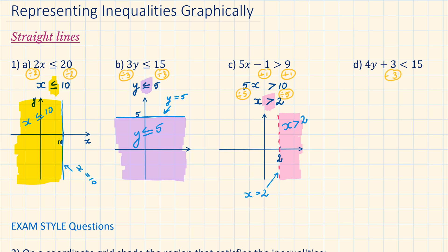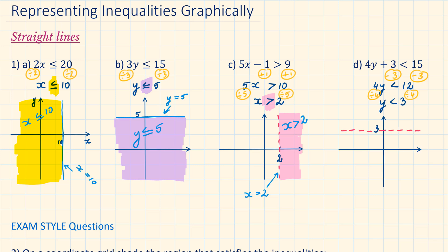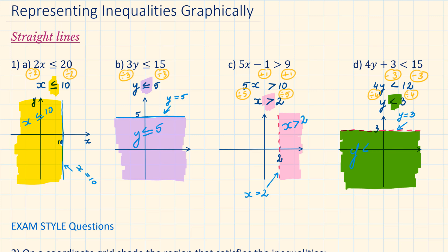Part D: subtract 3 from both sides, then divide by 4. The solution to this inequality is y is less than 3. Again, the 3 is not included, so we will not draw a solid line. The horizontal line represents y equals 3, and everything below that is y is less than 3.